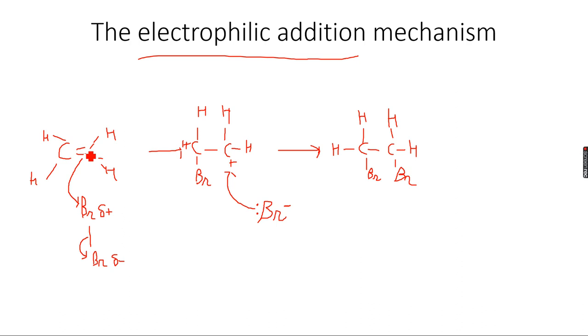This will become 1,2-dibromoethane. This is exactly what the electrophilic addition mechanism looks like. You can do the same for HCl, for Cl2, or anything, but this is the basic electrophilic addition mechanism. Remember to make the lone pairs, the charges, the dipoles, everything, and the curly arrows, and you will get 4 marks for this entire mechanism.